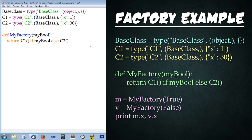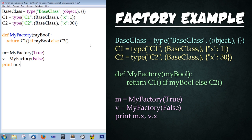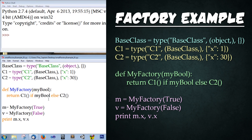Next we're going to call this method. Type: m = my_factory(True), then v = my_factory(False). And finally type: print m.x, v.x. Save it, shrink it down, and run it by pressing F5.